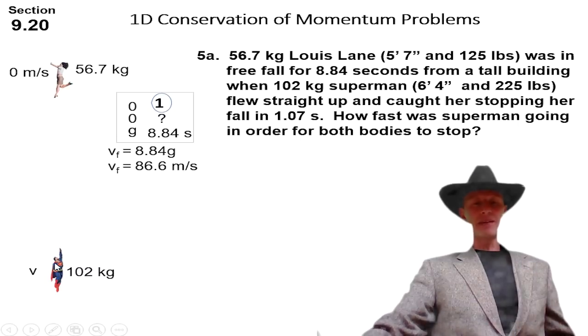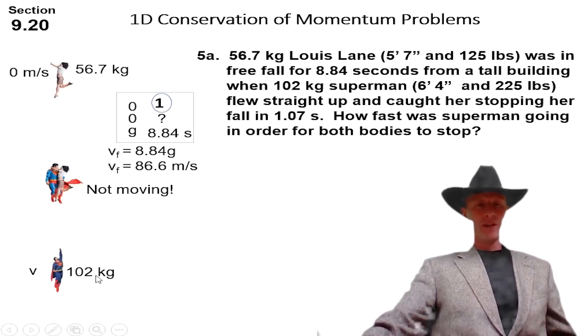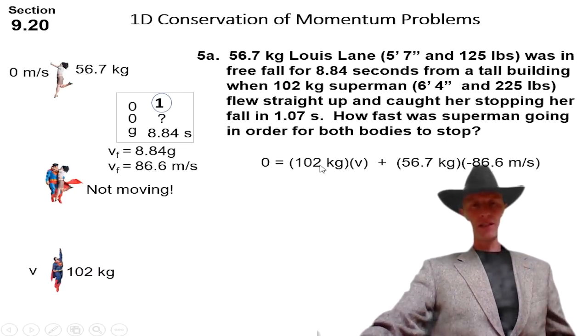So at some point, she's 86.6. Now Superman's 102 kilograms. He's flying with a certain velocity. Now he doesn't have to be flying at this speed or more in order to stop her because he's got a lot more mass. So at some point, they're not moving in the middle. So let's look at our conservation of momentum problem. So not moving. And originally we have, well, mass times velocity. That would be 56.7 times, let's go down, it's negative, 86.6. Now Superman's 102 times V.